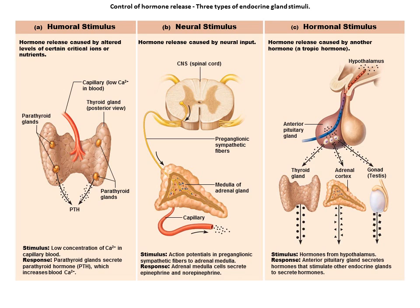Hormones can be produced by three different stimuli. The first is humoral stimulus, which involves changing blood levels of ions and nutrients that directly stimulate hormone secretion. For example, declining blood calcium concentration stimulates the parathyroid gland to secrete parathyroid hormone (PTH), which causes calcium concentration to rise and the stimulus is removed.